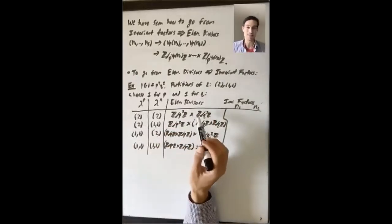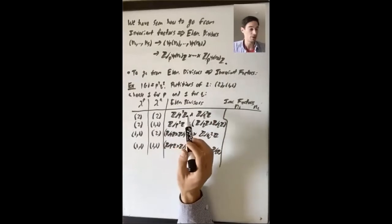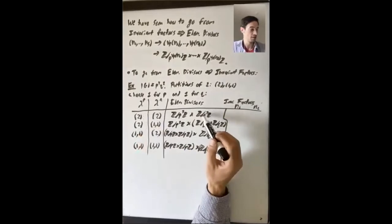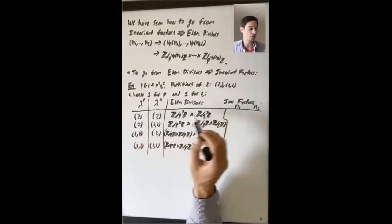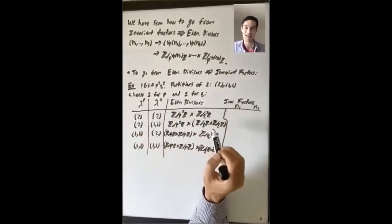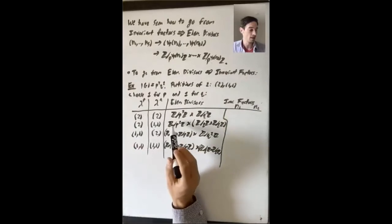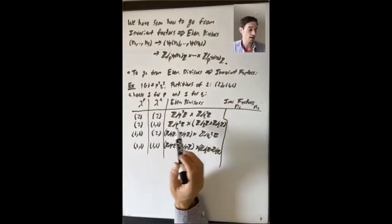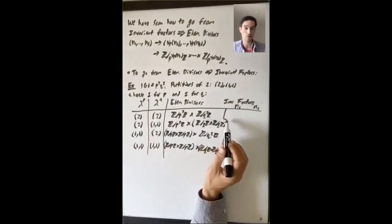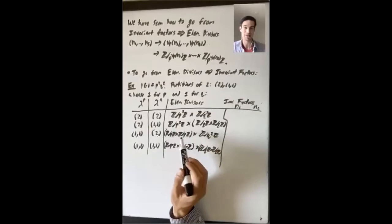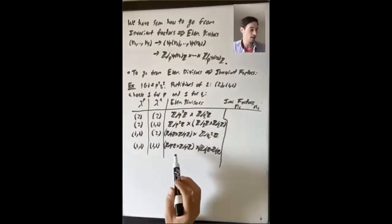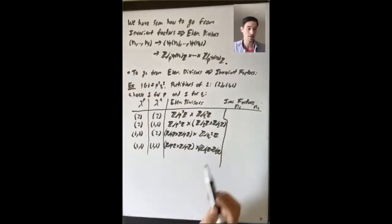For partition (2,2): Z mod p²Z cross Z mod q²Z. For (2, 1,1): Z mod p²Z cross Z mod qZ cross Z mod qZ. For (1,1, 2): Z mod pZ cross Z mod pZ cross Z mod q²Z. And for (1,1, 1,1): Z mod pZ cross Z mod pZ cross Z mod qZ cross Z mod qZ.